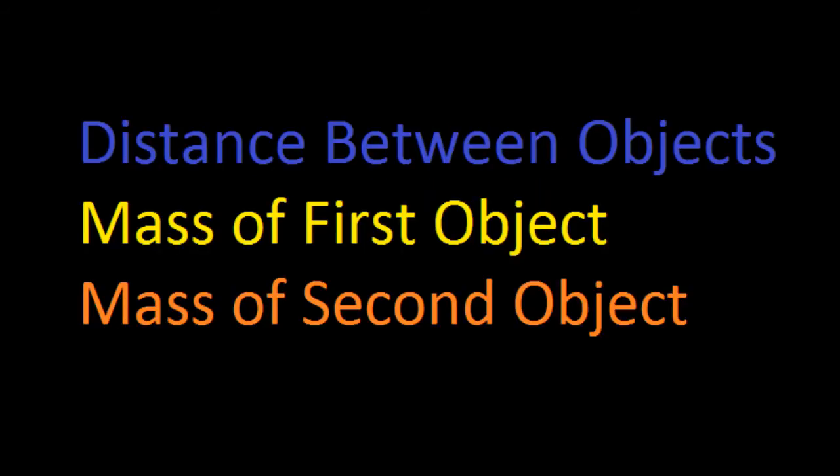To find the barycenter you need to know three different things: the distance between the objects, the mass of the first object, and the mass of the second object.